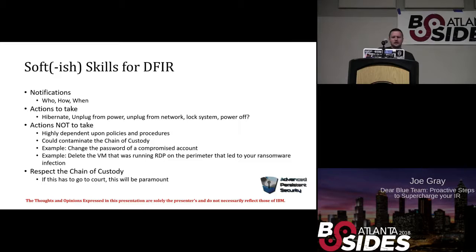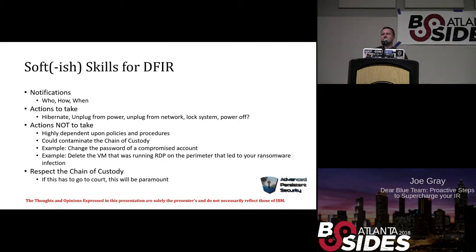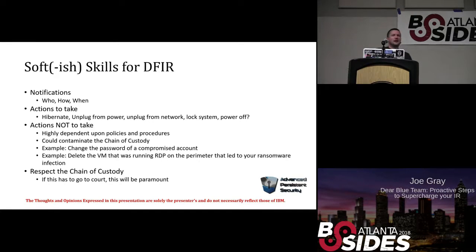With soft skills, you have to take into account: who do you want notified? How do you want them to notify you? If someone has clicked a phish, you probably don't want the notification to be via email — you should assume your email system has been compromised and the attacker can read everything. That's where things like Slack, Mastodon, texting, Signal, Wickr, carrier pigeons, smoke signals, Morse code, face-to-face — just have a way to report it.